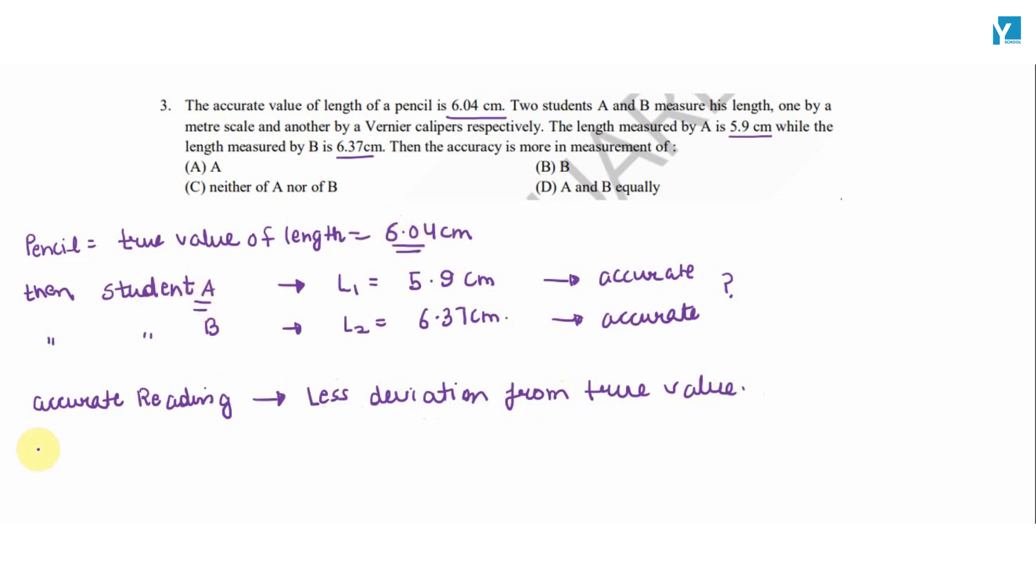Error in reading of student A: the difference is |6.04 - 5.9| = 0.14 cm.